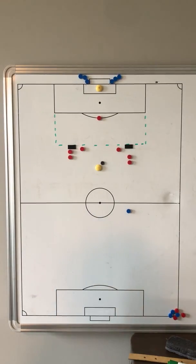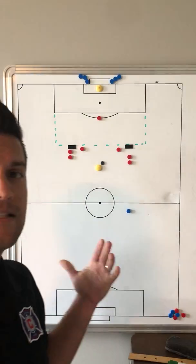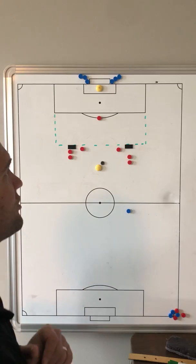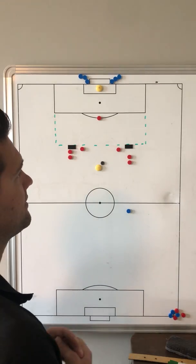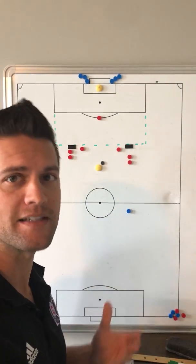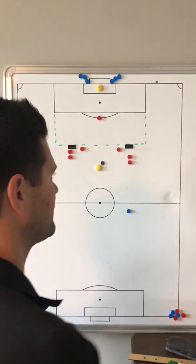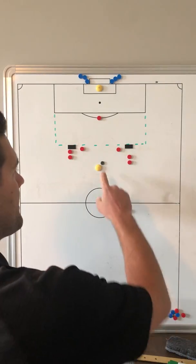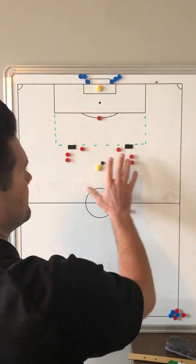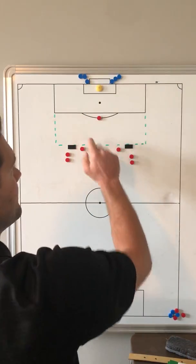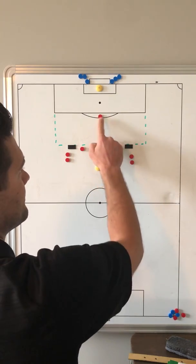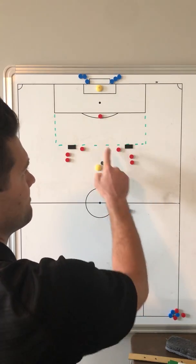Here's an offensive action-to-goal activity. Very simple — just to create shots as well as have a counter-pressing element to it. So here's a line of attackers, defenders, and an all-time attacker for the red team.